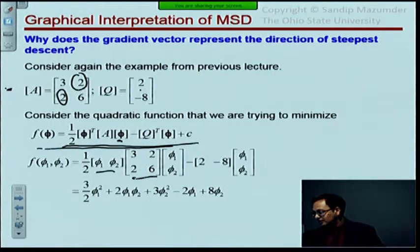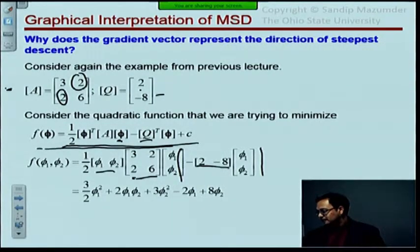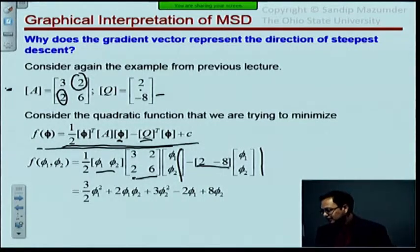Q transpose is 2, minus 8 as you can see. Here's your Q and I've used a value of C equal to 10. The reason I used C equal to 10 is just so that whatever constant comes out of that multiplication just drops out and you get a 0.